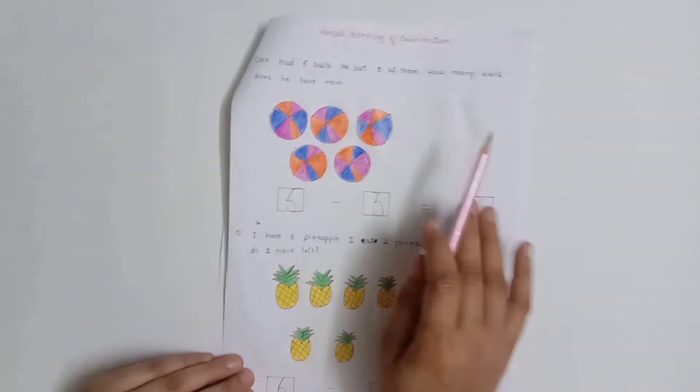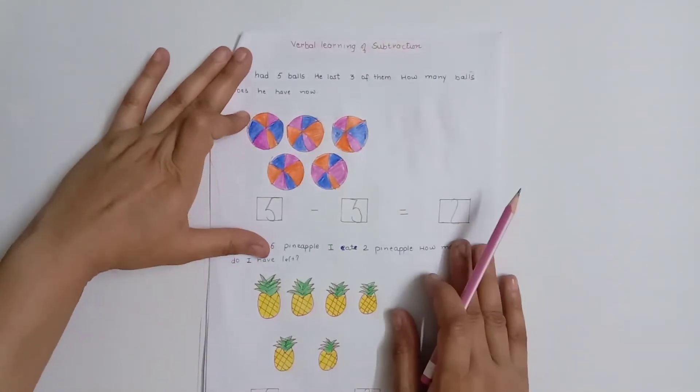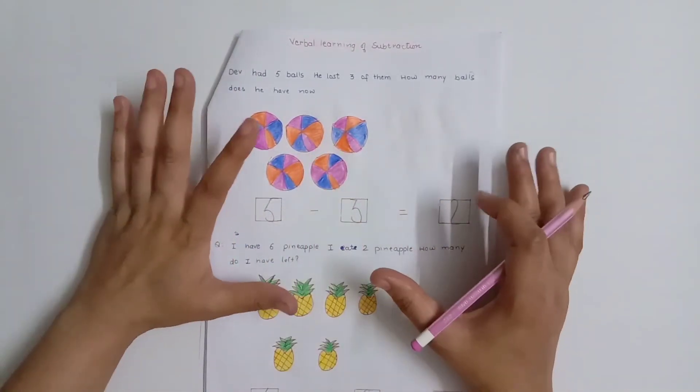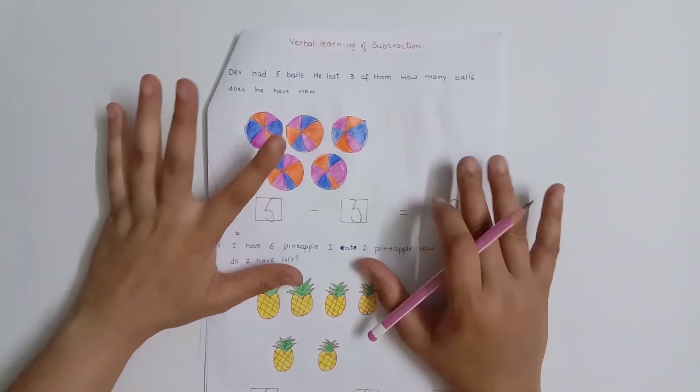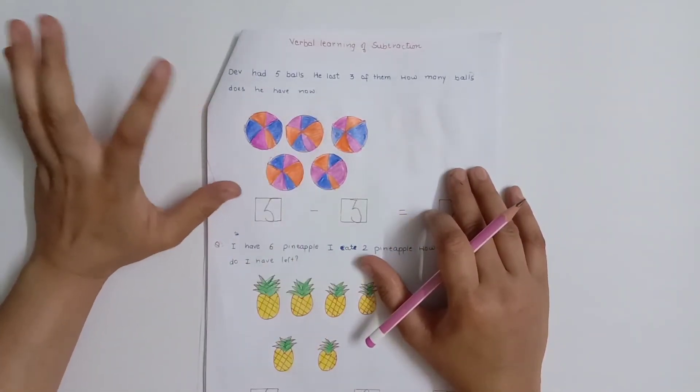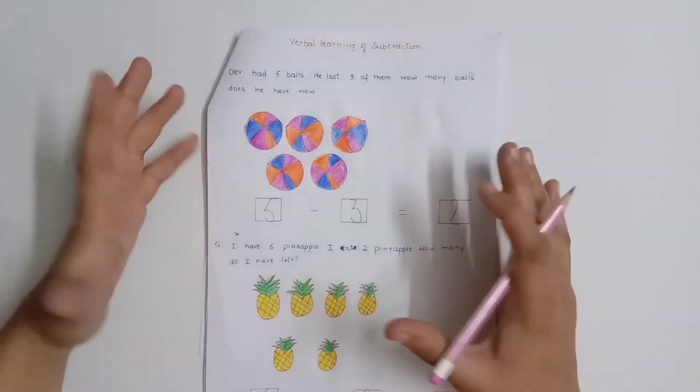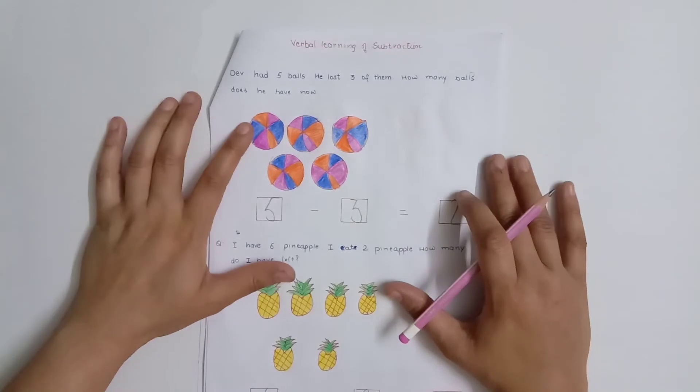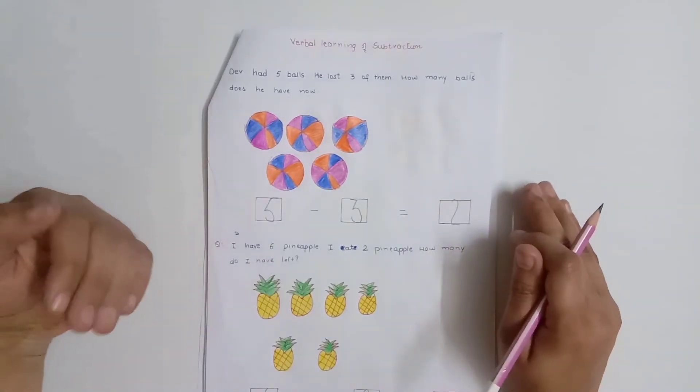After that, our next worksheet is verbal learning of subtraction. I am giving verbal learning of subtraction because the child needs to understand addition and subtraction problems that occur in daily life and how to solve these statements or problems.